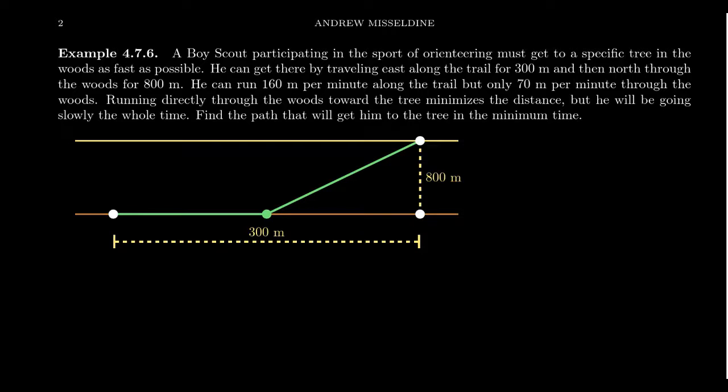So he's participating in the sport of orienteering. He must find a specific tree in the woods as fast as possible. So again, it's a race. Like the last one, he has to do it in the fastest time possible. It doesn't matter about speed, doesn't matter about distance, he needs to do it fast. It's part of a race. He can get there by traveling east along the trail for 300 meters, as you can see illustrated, and then north through the woods for 800 meters.